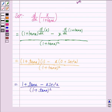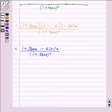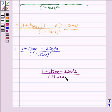Hence the derivative is 1 plus tan x minus x into secant square x upon 1 plus tan x whole square.